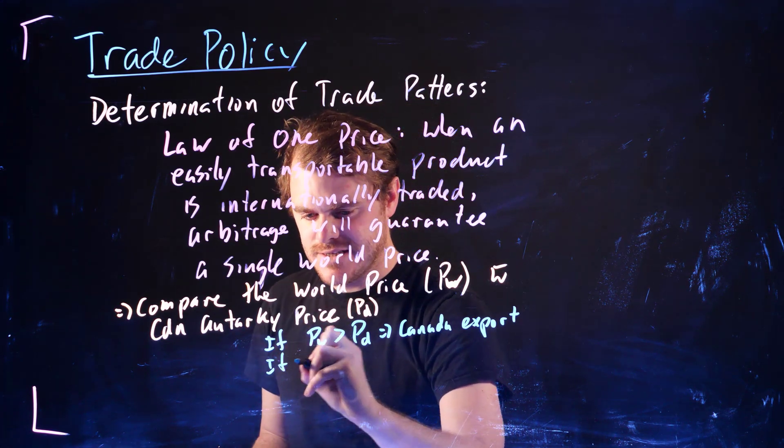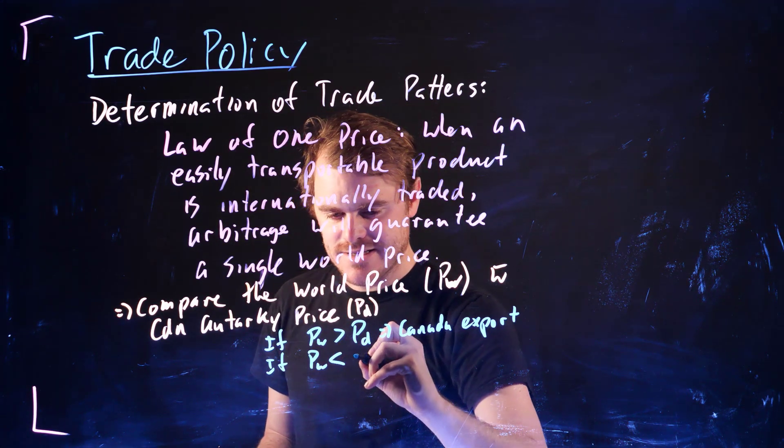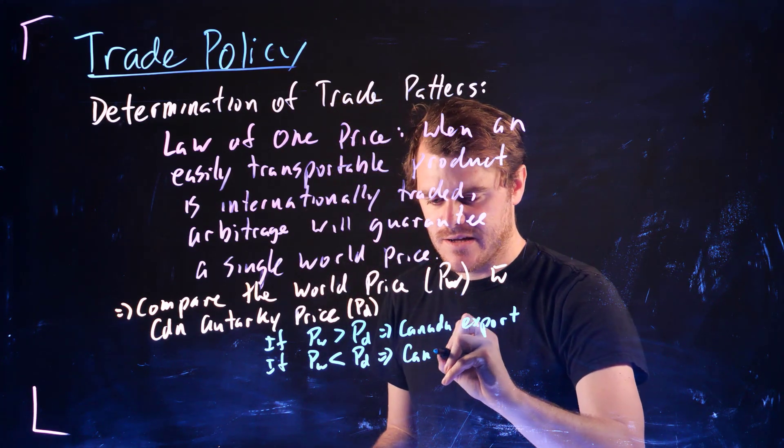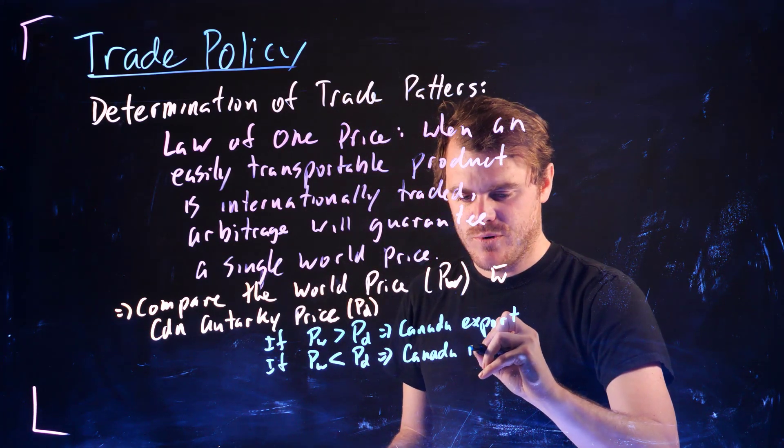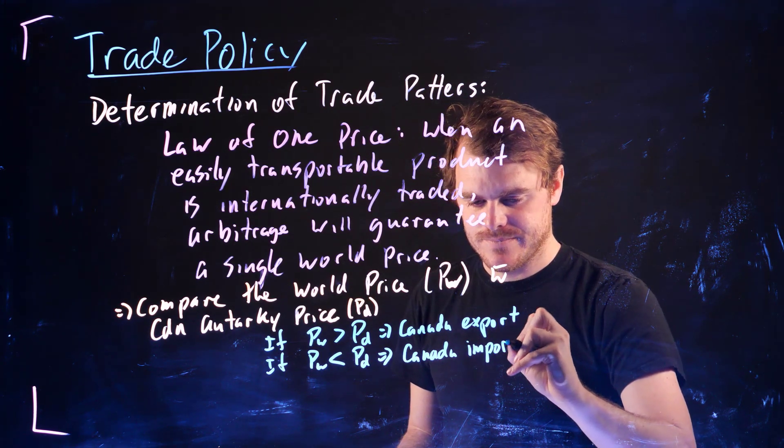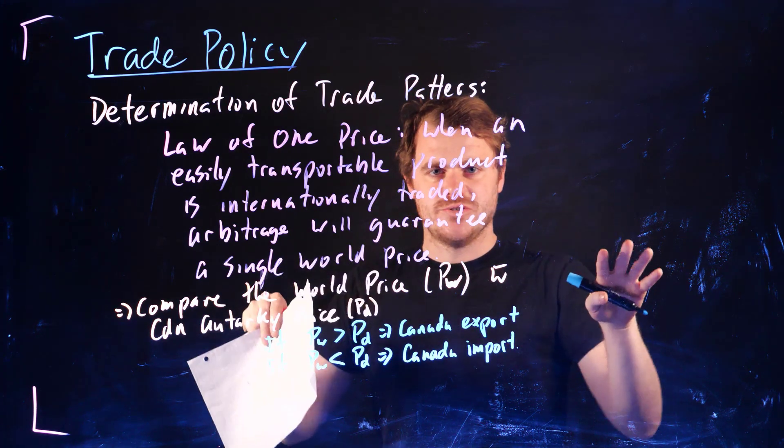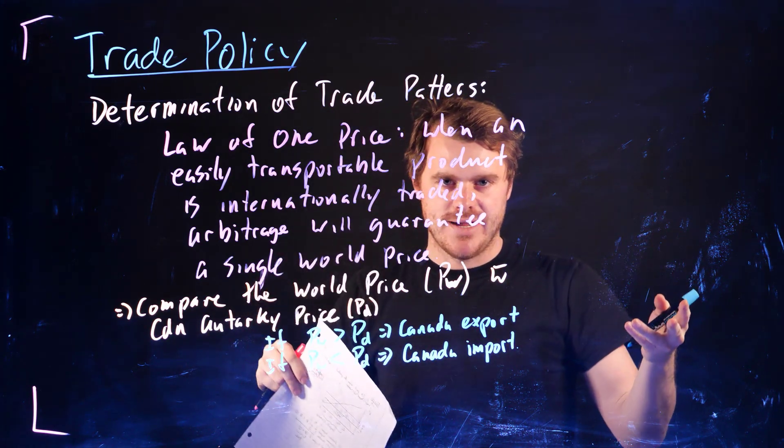On the other hand, if this world price is less than the autarchy price in Canada, then Canada will import this good. So let's quickly erase this and take a look at two graphs to maybe visualize what I'm saying here.